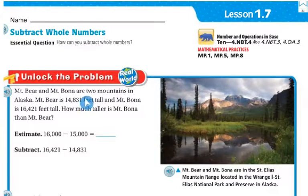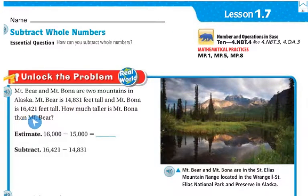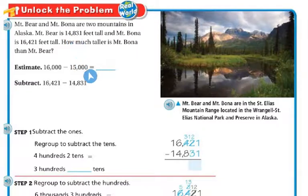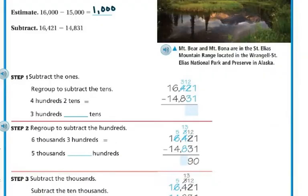Mount Bear and Mount Bona are two mountains in Alaska. Mount Bear is 14,831 feet tall and Mount Bona is 16,421 feet tall. How much taller is Mount Bona than Mount Bear? You can estimate: 16,421 is close to 16,000 and 14,831 is close to 15,000, so 16,000 minus 15,000 is 1,000. Now we're going to subtract the actual numbers: 16,421 minus 14,831.